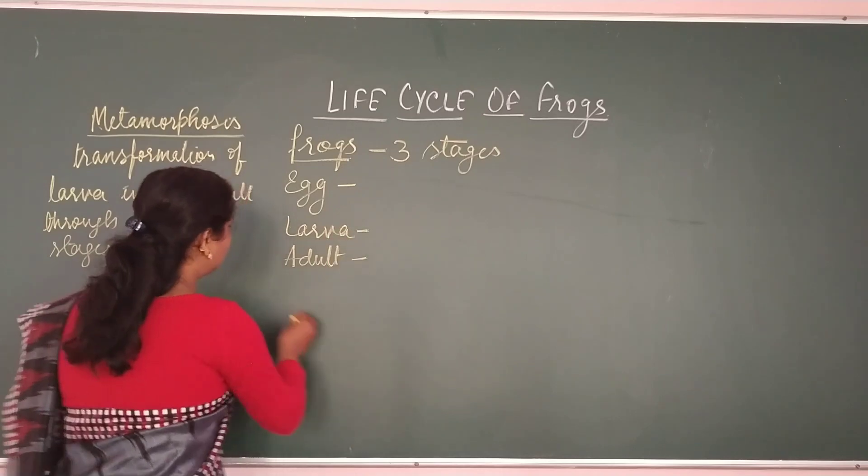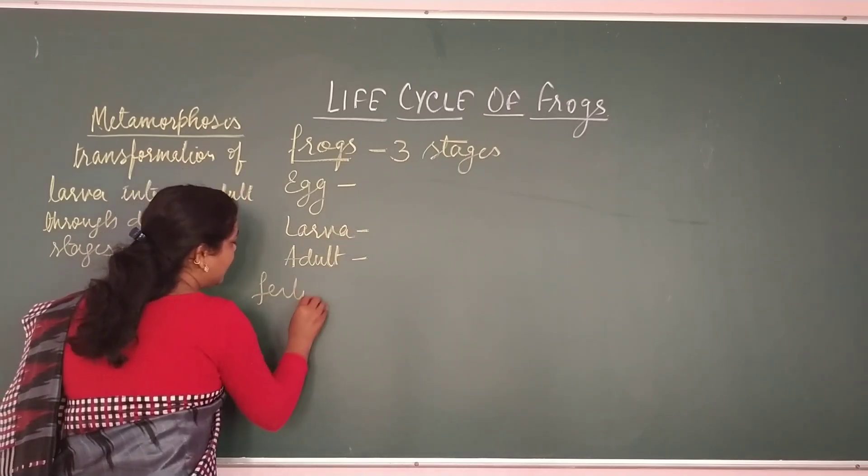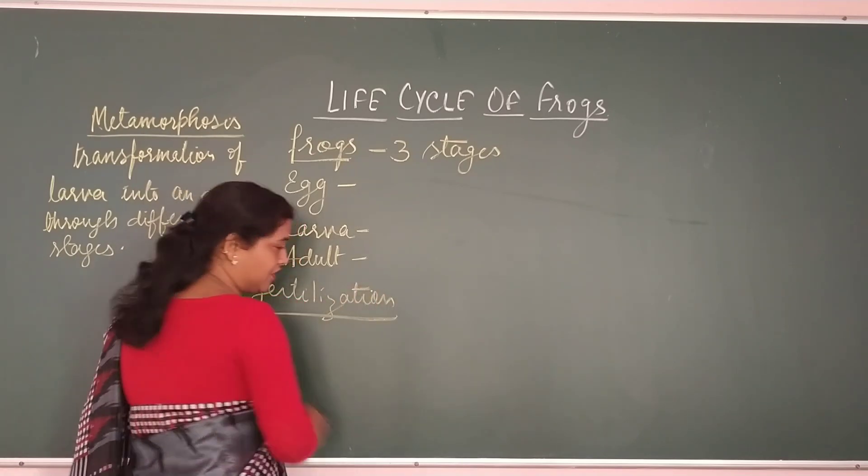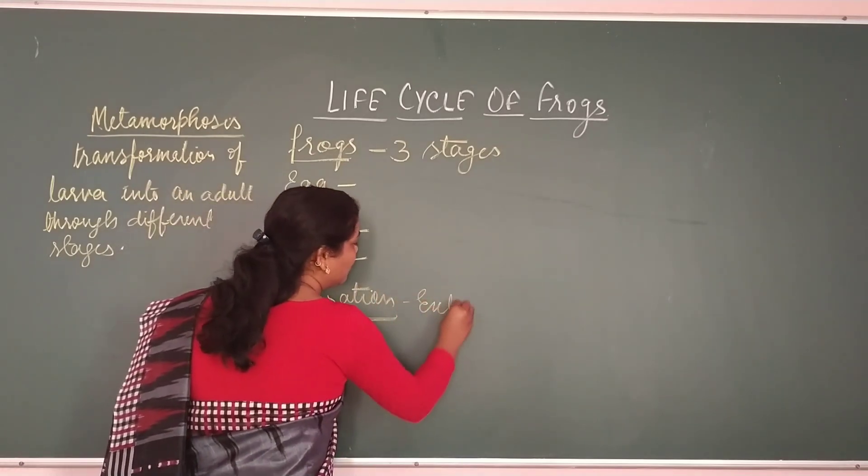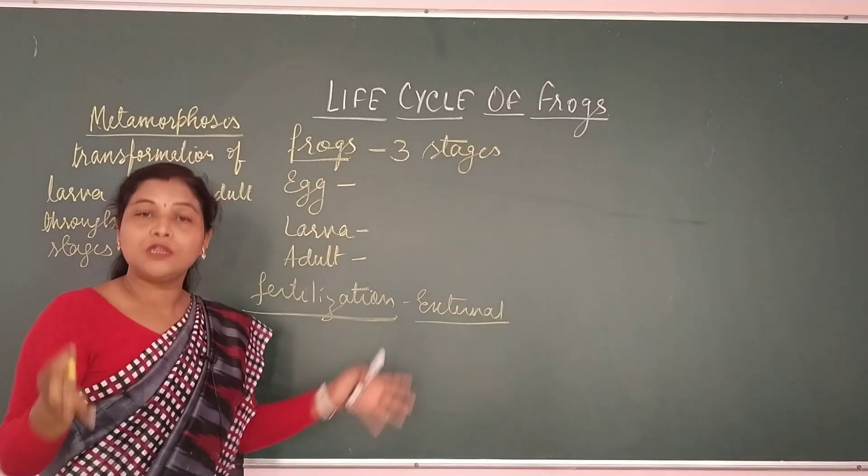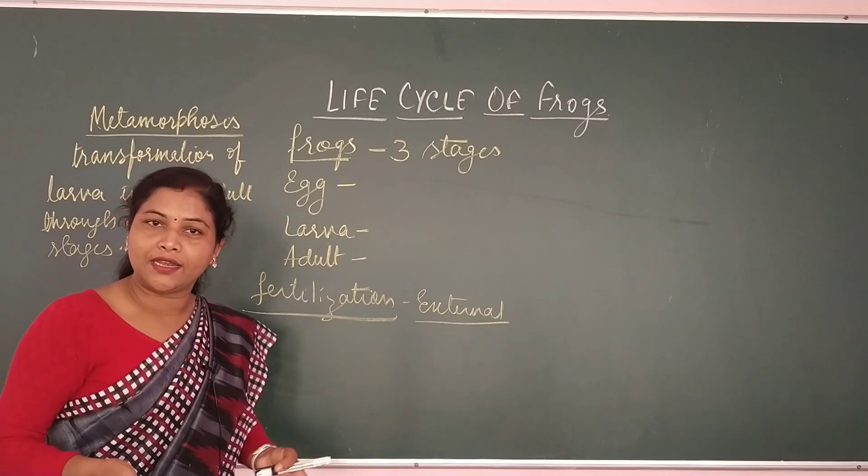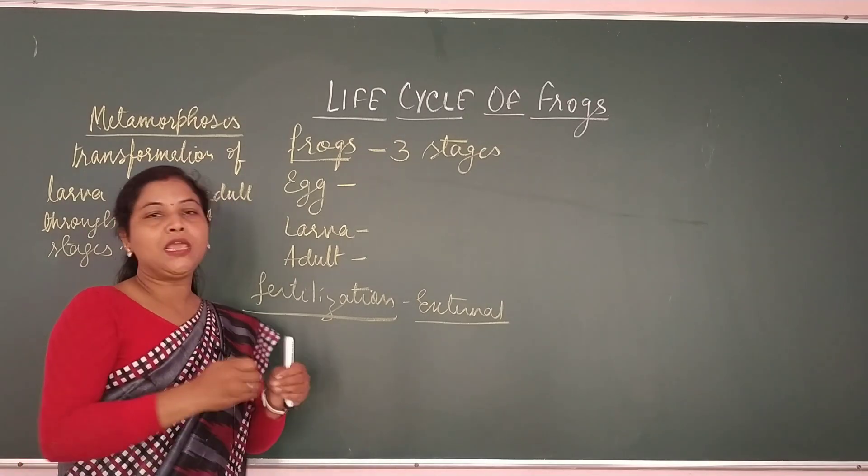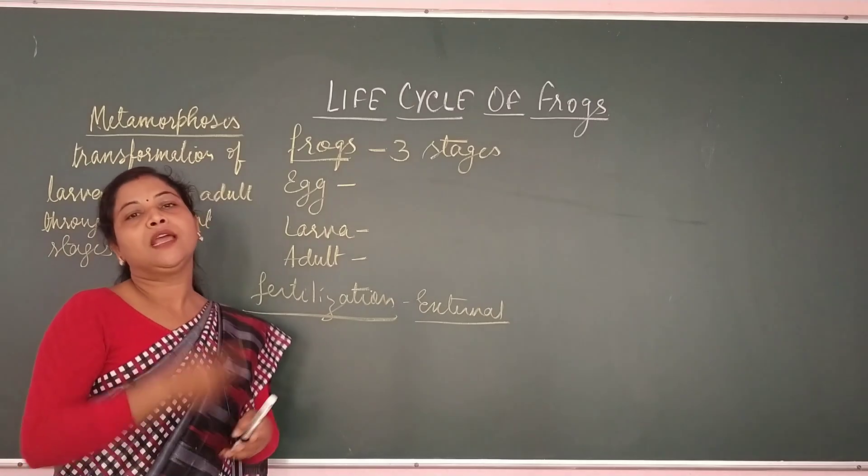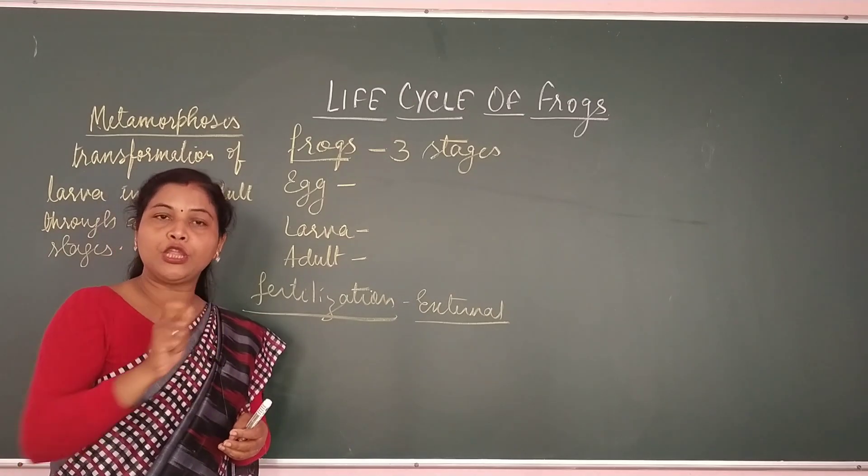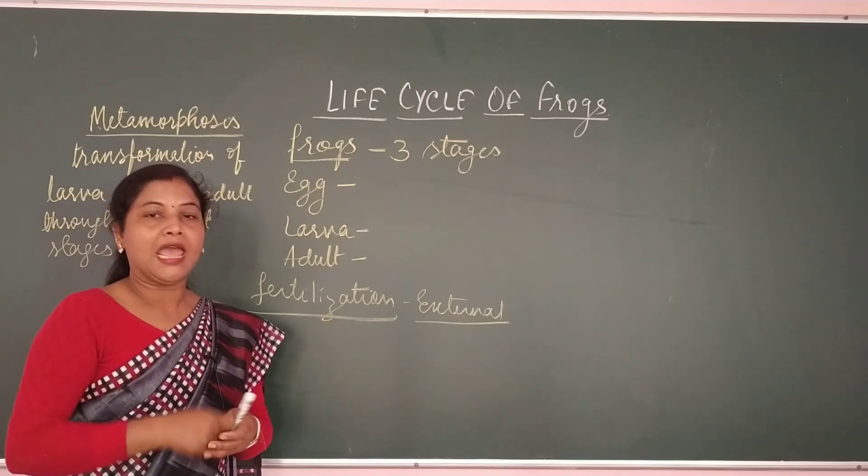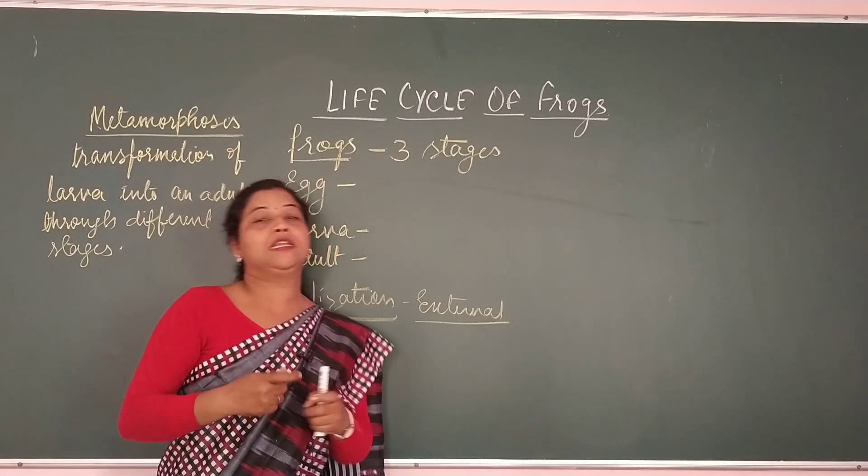We all know in frogs, fertilization is external. Frogs mein joo fertilization hota hai, when the female frog lay eggs, it is thousands of eggs. They lay in water. And at the same time, when the female frog leaves in the water, male frogs they release their reproductive cells and they get fertilized. And the eggs get fertilized.